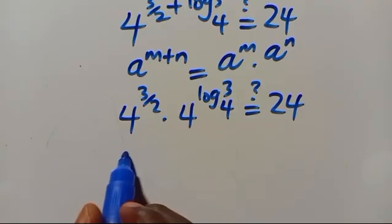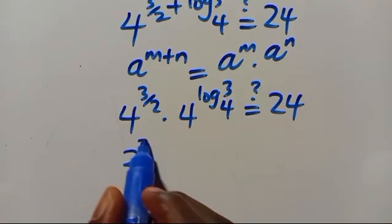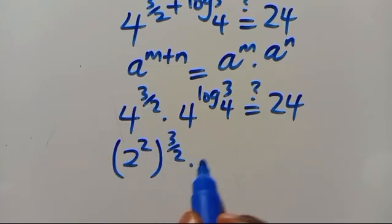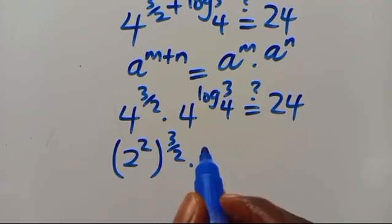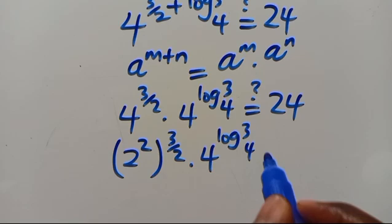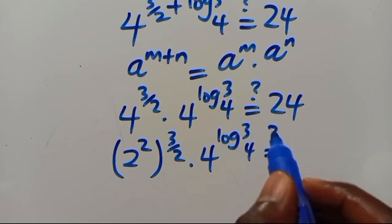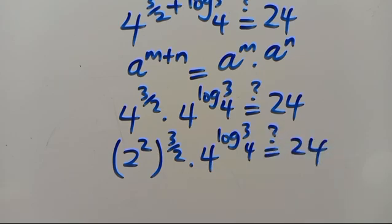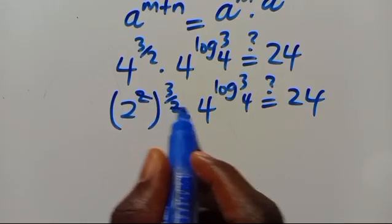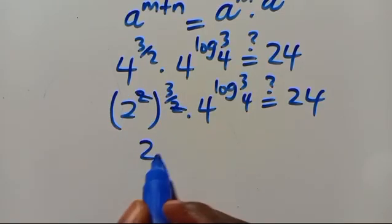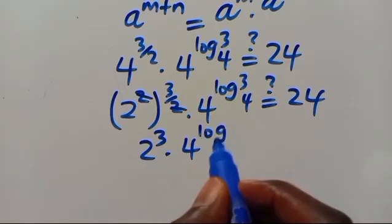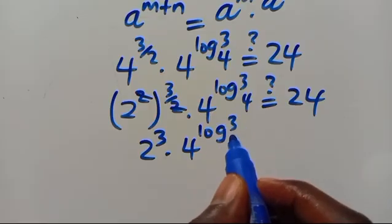Writing 4 as 2 squared: (2 squared) to the power of 3 over 2 simplifies. The exponents cancel giving 2 to the power of 3, multiplied by 4 to the power of log base 4 of 3, which should equal 24.